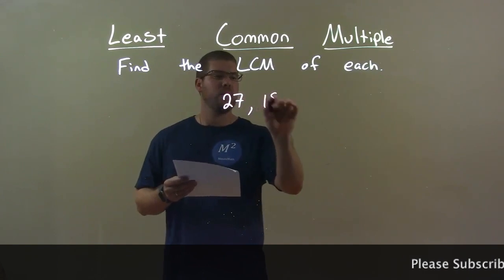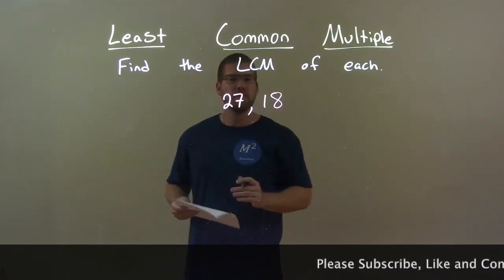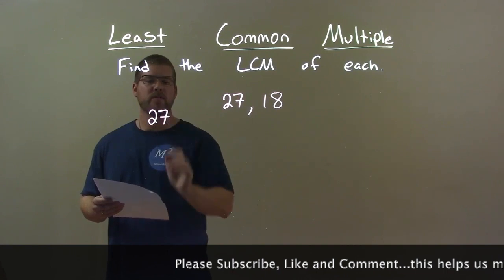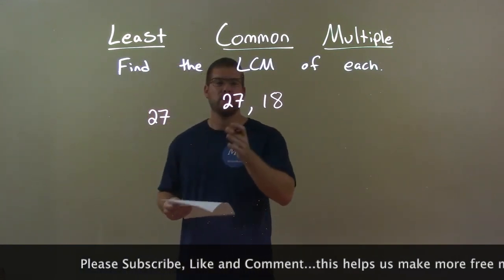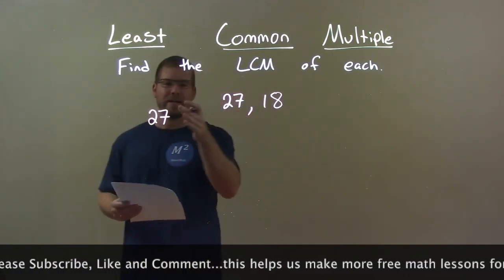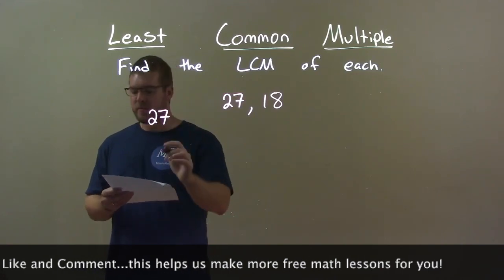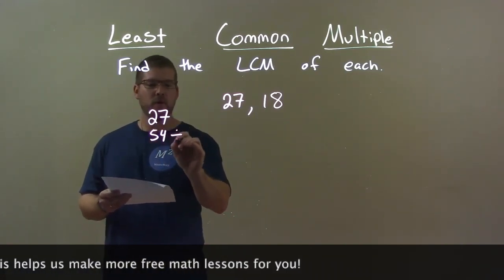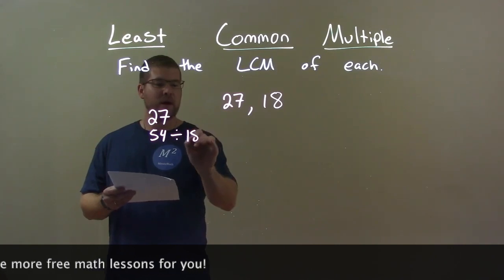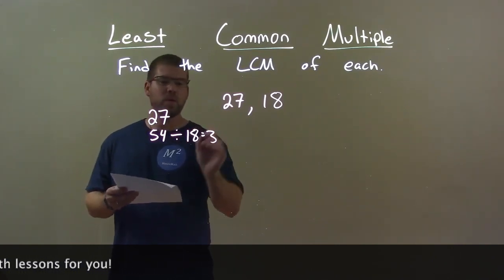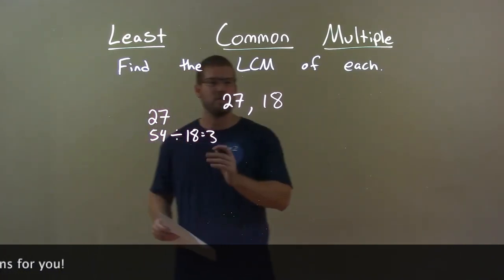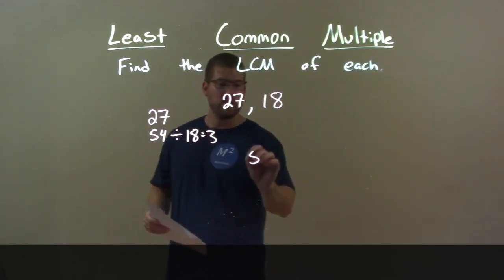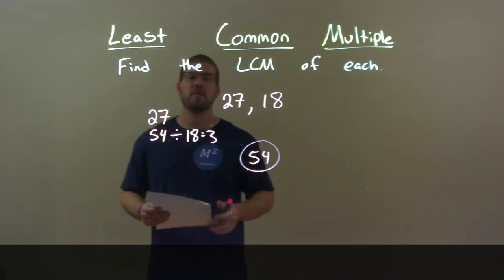27 and 18. The larger of the two is 27. So we go through the multiples of 27 and find the first one that's also divisible by 18. 18 does not go into 27, but the next multiple is 54. 54 can be divided by 18, and that becomes 3. So 54 is my least common multiple.